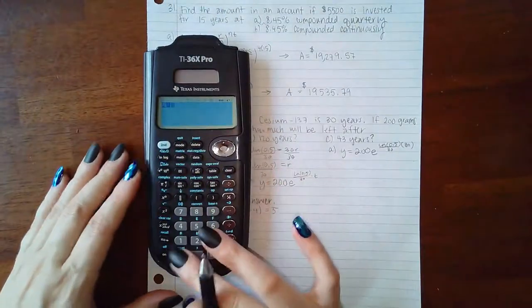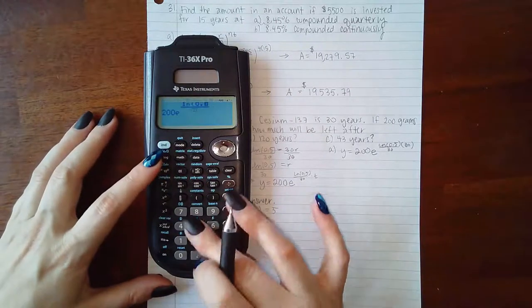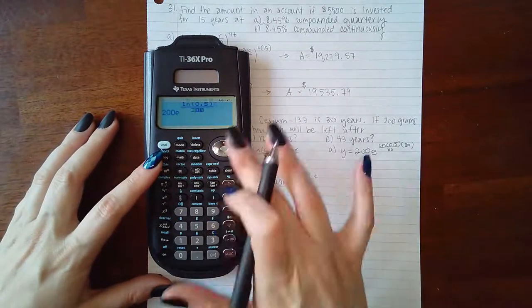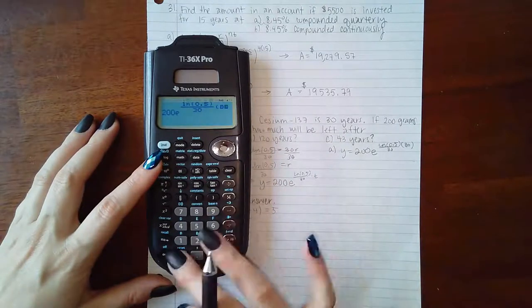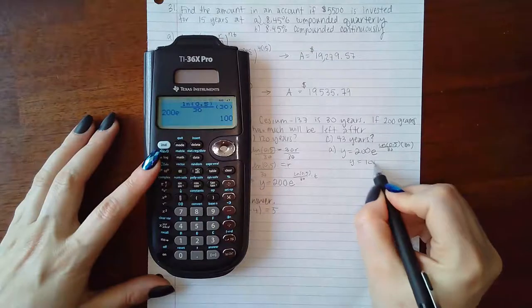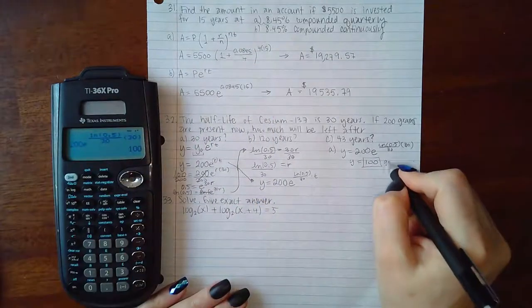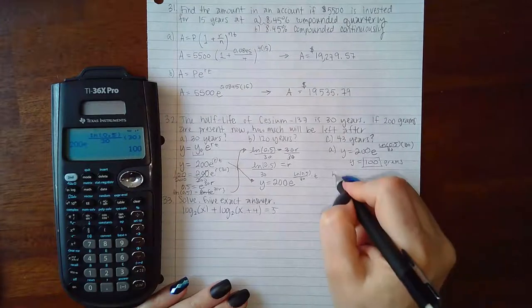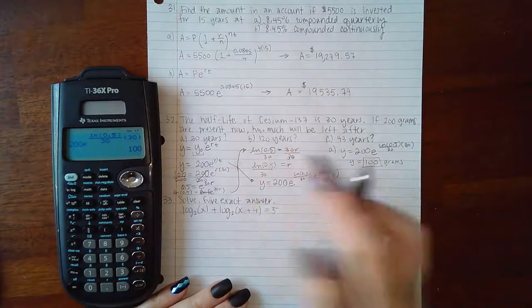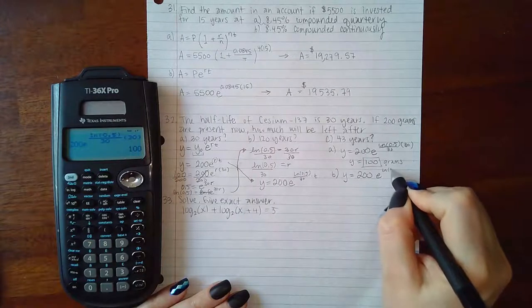But if you want to use the equation just to verify, that's okay. So let me clear this out. 200e^(ln(0.5)/30), and on the side I'm going to plug in 30, and sure enough I do get 100. So 100 grams would be left.